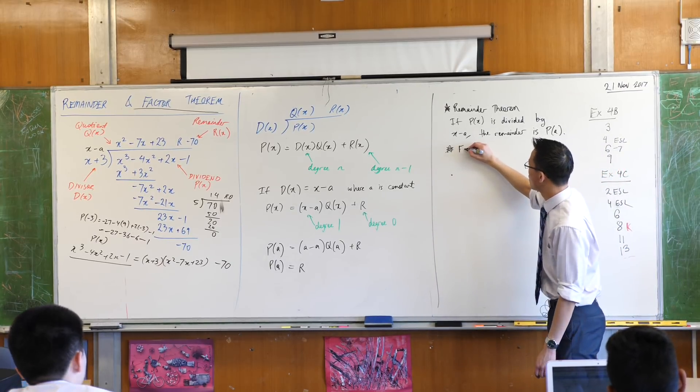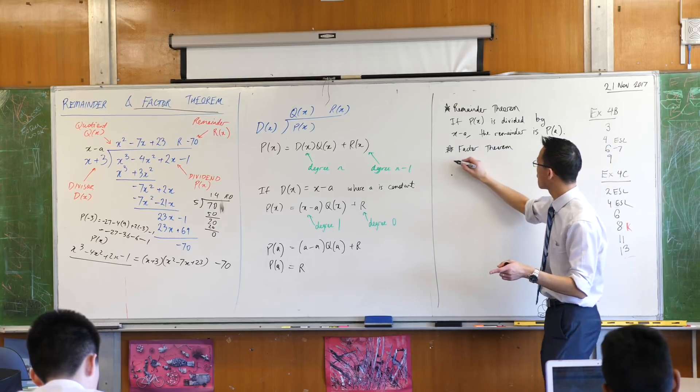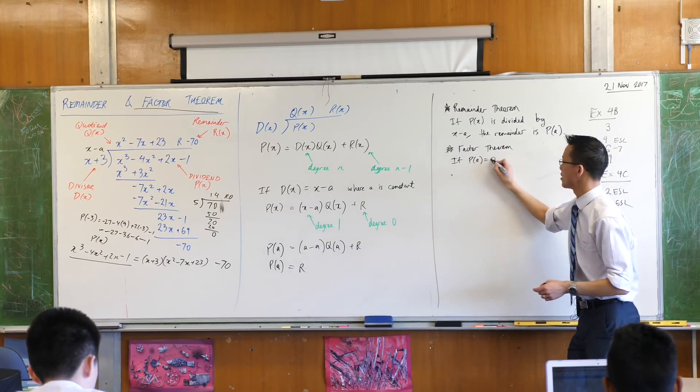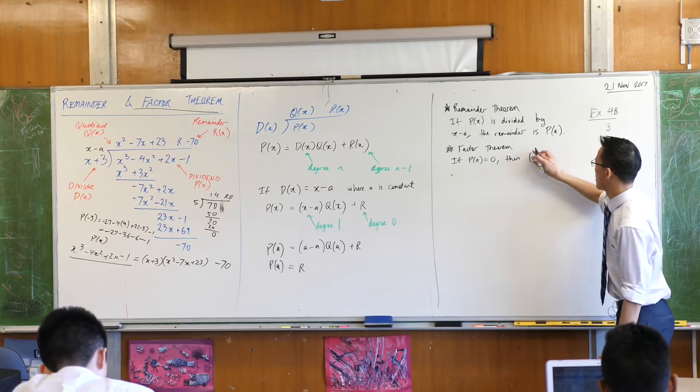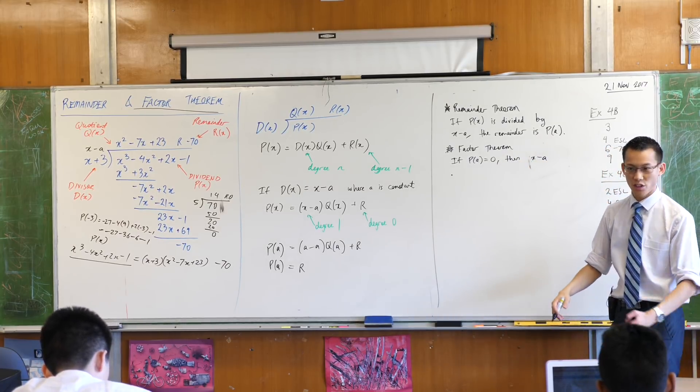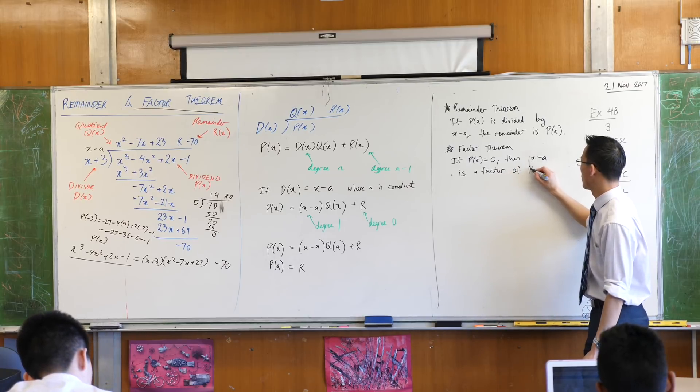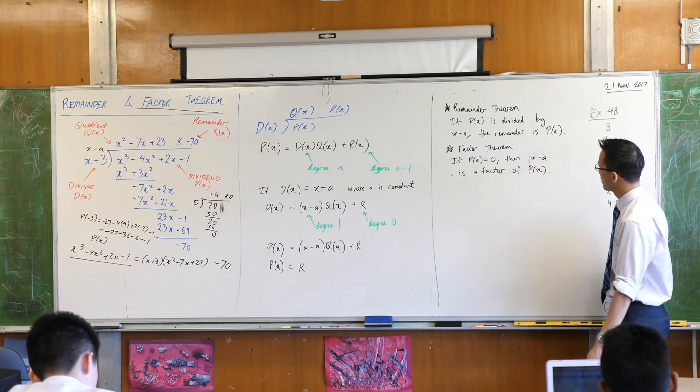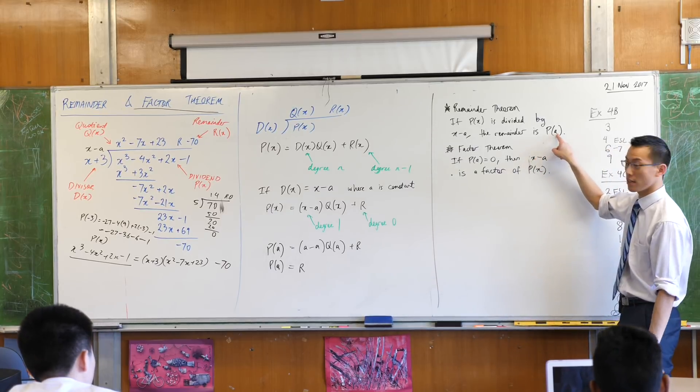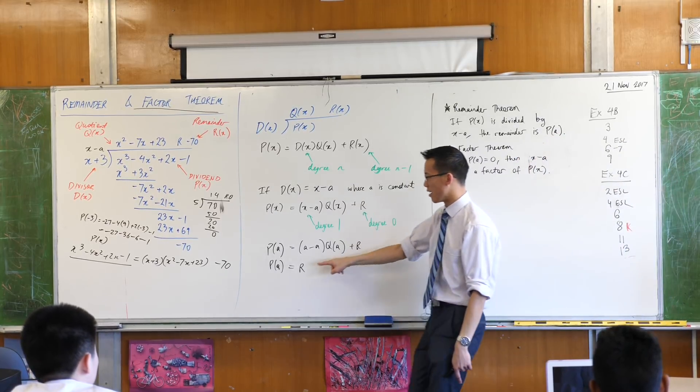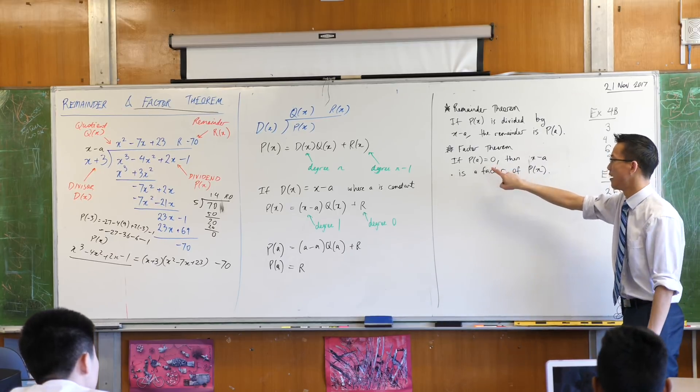The remainder theorem is not that useful. It's useful specifically when the remainder is zero. So the factor theorem states if P(a) equals zero, in that special case where you tried it out and you're like, ta-da, no remainder, then x minus a is not just something I divided by, it's a factor, hence factor theorem, of P(x). But where this is really most useful is where the remainder you get happens to be zero. There's no remainder, it's a factor.